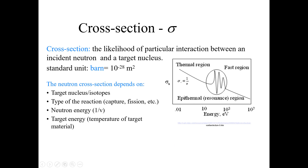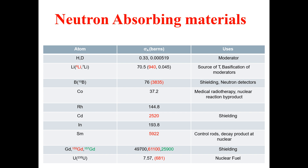Now let's discuss different neutron absorbing materials. In this table, on the left-hand side we have the atoms, in the middle we have the absorption cross-sections in units of barns, and on the right-hand side we have the uses.